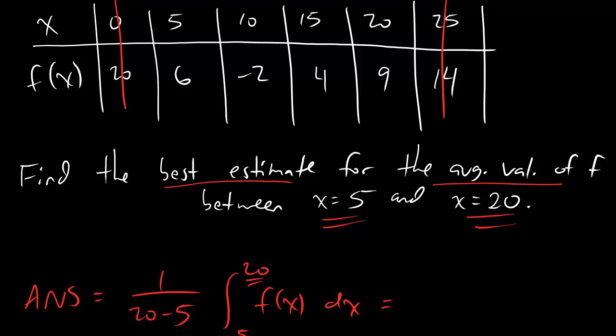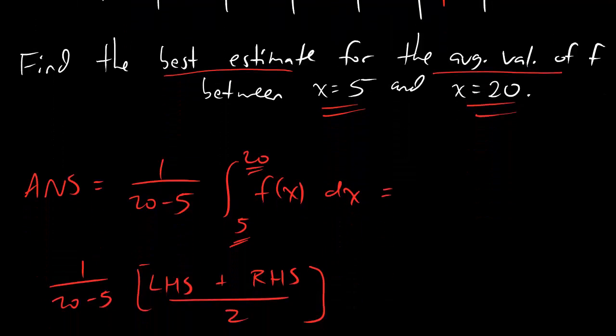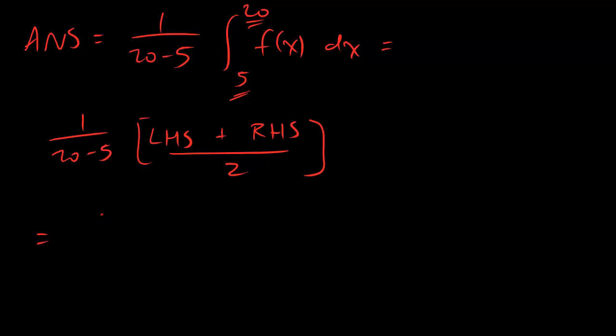the left-hand sum numbers look like they're 6 minus 2 and 4. So, this is going to be 20 minus 5. 6 plus... Well, alright, wait. Let's do it like this. Let's write out left-hand sum equals delta x, which is 5. And then, we said 6 minus 2 and 4.